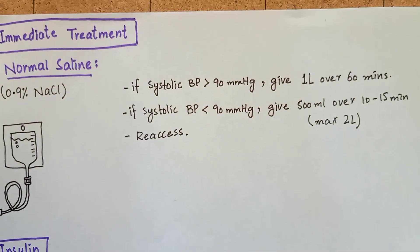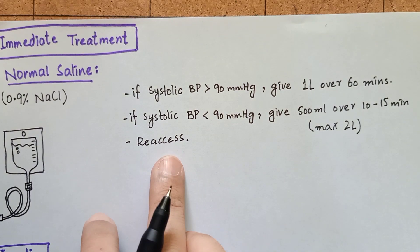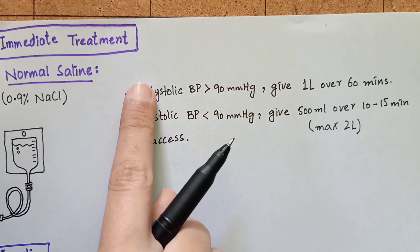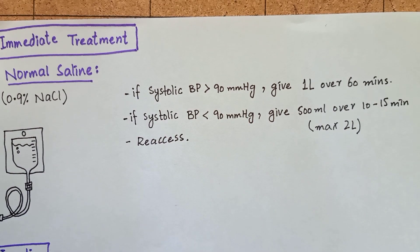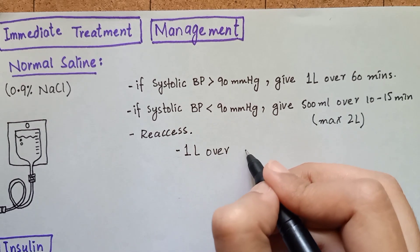For intravenous fluid, you will commence 0.9% sodium chloride initially by keeping blood pressure into consideration. You will give 1 liter of normal saline over 1 hour.